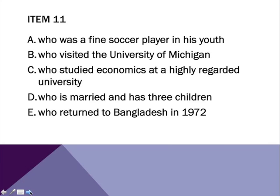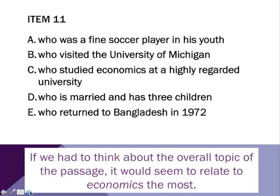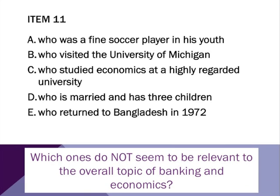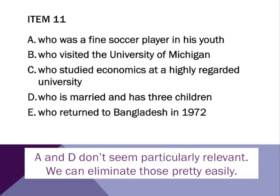So if we had to think about the overall topic of the passage, it does seem to relate to the idea of money — specifically economics — which we do see already in answer choice letter C. Let's keep it, because the fact that this particular person studied economics might seem at least relevant, or at least doesn't seem to hurt the information that we find in the rest of the choices. We should try to eliminate information that doesn't seem relevant first. Which ones do not seem to relate to banking or economics? For example, A — the fact that he was a soccer player — that might be interesting, but it doesn't necessarily relate to what we're doing here. D is also something that might be interesting, but has really no other connection to the rest of the passage. So we can eliminate those pretty easily.